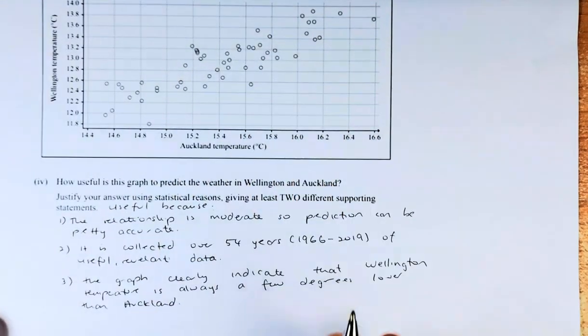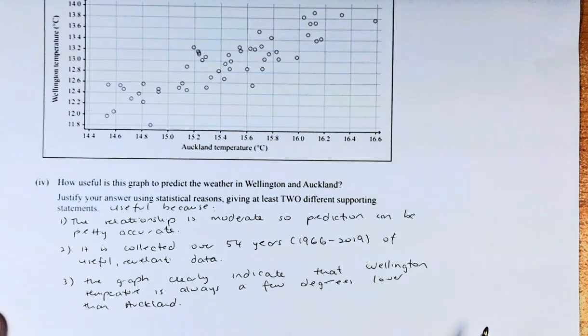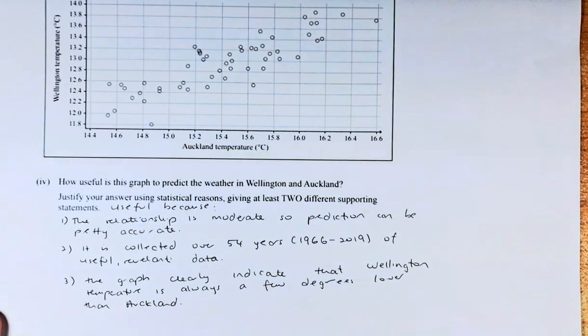So the relationship is moderate, so I can make the prediction can be pretty accurate, okay? So if it was weak, then I will have some concern about predicting the future.